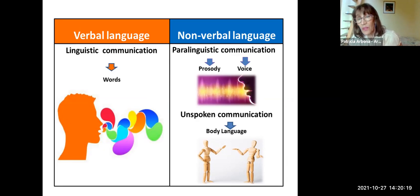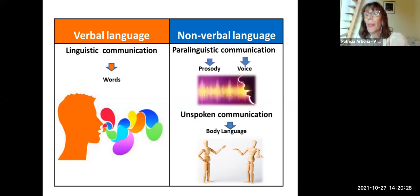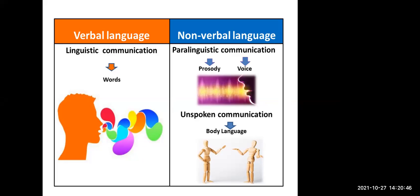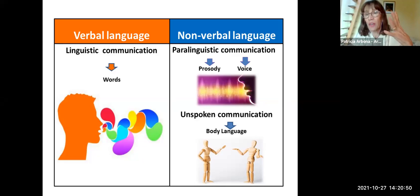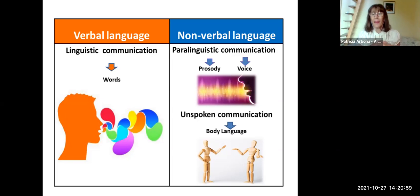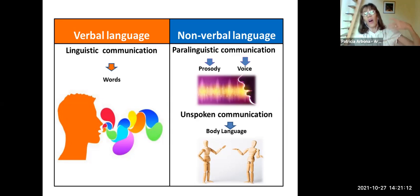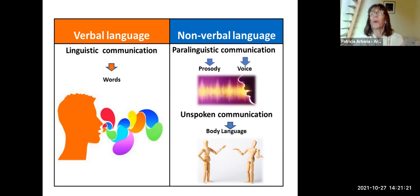I'm going to give you an example. Suppose you say to me, 'What do you think about this?' and I say 'I don't believe you' — with body language and face expression indicating I don't care. The same question, and I say 'I don't believe you' — now I'm angry because I know you are not telling me the truth. And finally, 'I don't believe you' — I'm very sad because you are lying to me. I'm always using the same sequence of words.